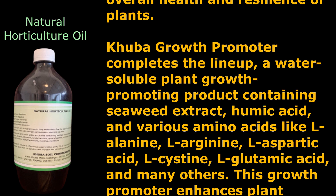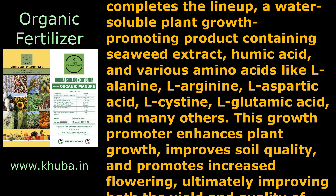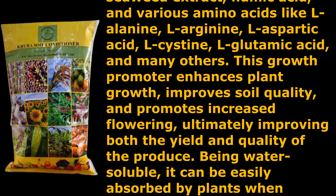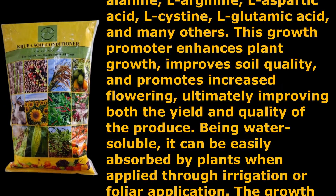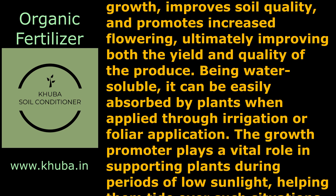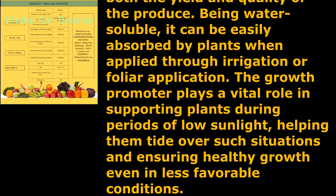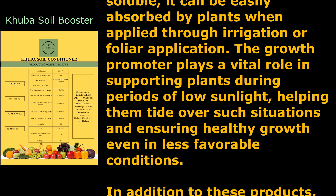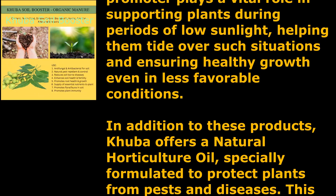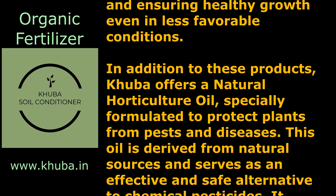Kuba Growth Promoter is a water-soluble plant growth promoting product containing seaweed extract, humic acid, and various amino acids like L-alanine, L-arginine, L-aspartic acid, L-cysteine, L-glutamic acid, and many others. This growth promoter enhances plant growth, improves soil quality, and promotes increased flowering, ultimately improving both the yield and quality of the produce. Being water-soluble, it can be easily absorbed by plants when applied through irrigation or foliar application, and plays a vital role in supporting plants during periods of low sunlight.